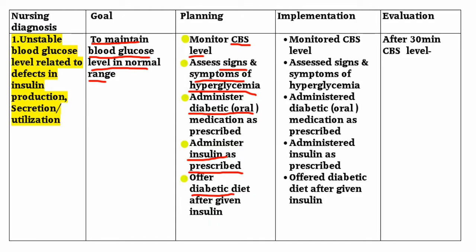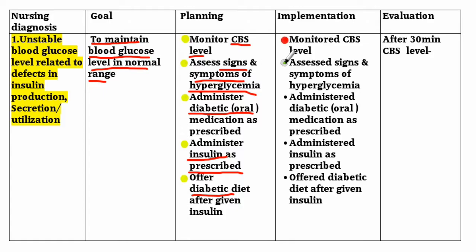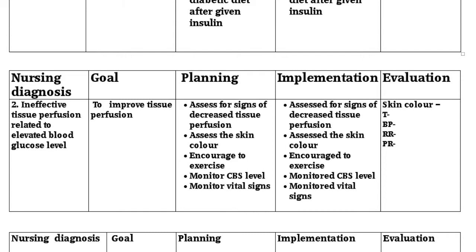Implementation: monitor blood glucose level, assess signs and symptoms of hyperglycemia, administer oral diabetic medication as prescribed, administer insulin as prescribed, and offer diabetic diet after giving insulin. Evaluation: evaluate blood glucose level after 30 minutes.